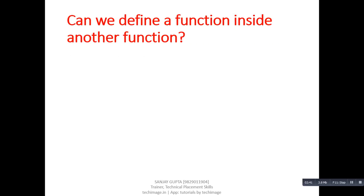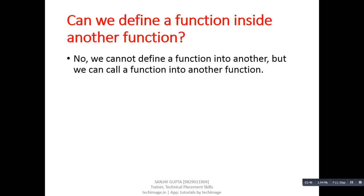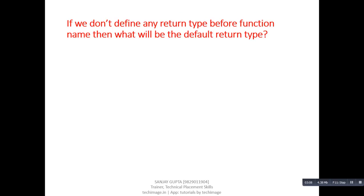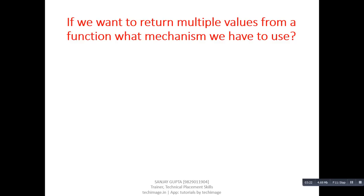Next question: can we define a function inside another function? Answer: no, we cannot define a function inside another function, but we can call a function inside another function. Next question: can a function return multiple values using call by value? Answer: no. Next question: if we don't define any return type before the function name, what will be the default return type? Answer: int. Next question: if you want to return multiple values from a function, what mechanism do we have to use? Answer: call by address.